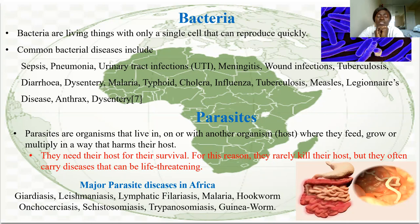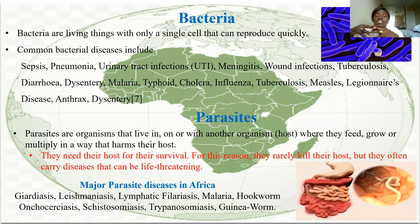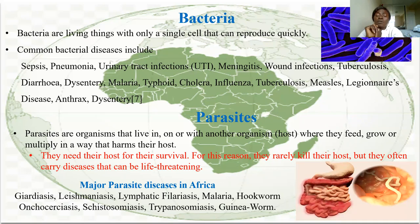Parasites are organisms that live in or on another organism, where they feed, grow, or multiply in ways that can harm their host. Most times they don't kill their host quickly — they cause life-threatening illness while needing the host to survive. Major parasitic diseases in Africa include malaria, hookworm, schistosomiasis, guinea worm, onchocerciasis (which can cause river blindness), and lymphatic filariasis.